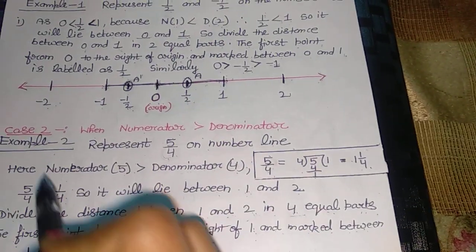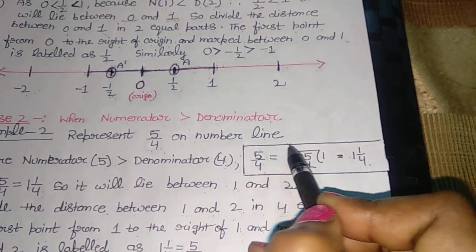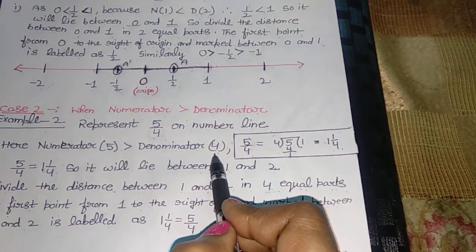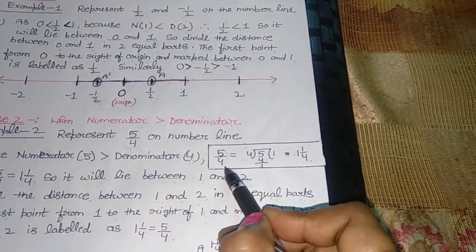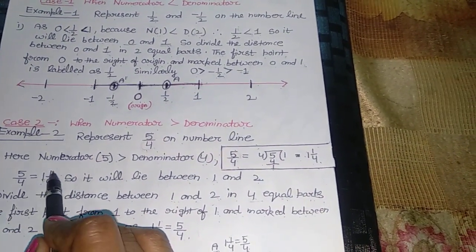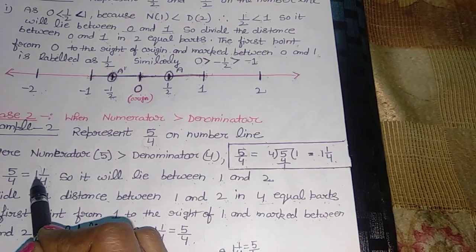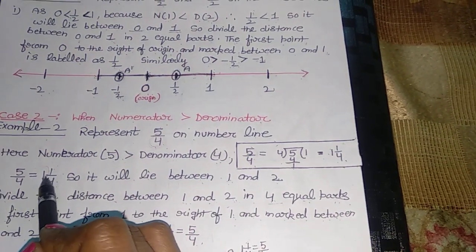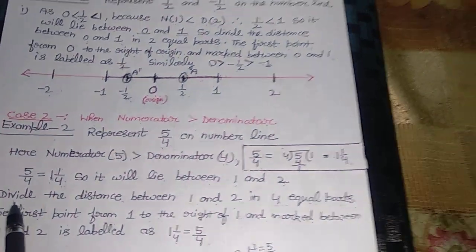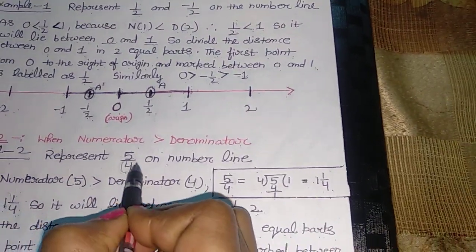Now, the second case: when the numerator is greater than the denominator. For example, you have to represent 5/4 on the number line. Here the numerator 5 is greater than the denominator 4. For that, first we convert 5/4 into mixed form, which is 1 whole 1/4. Since 5/4 equals 1 whole 1/4, it is greater than 1 and the next number after 1 is 2. Therefore, 1 whole 1/4 will lie between 1 and 2. We will divide the distance between 1 and 2 into 4 equal parts — that is the denominator of the given rational number.